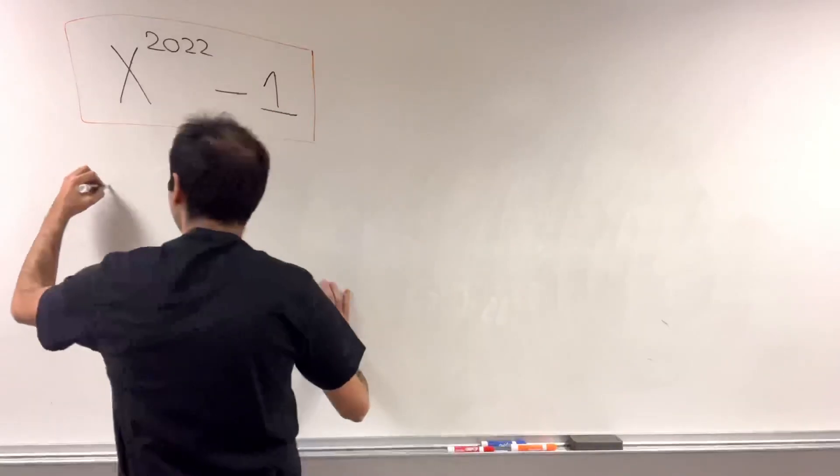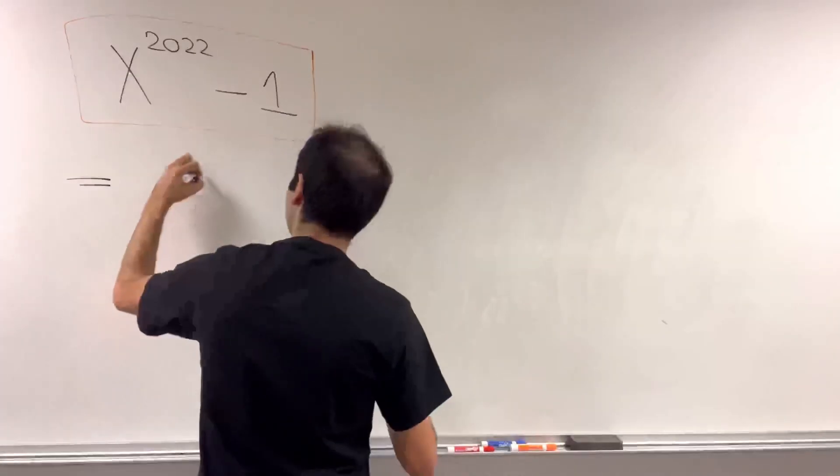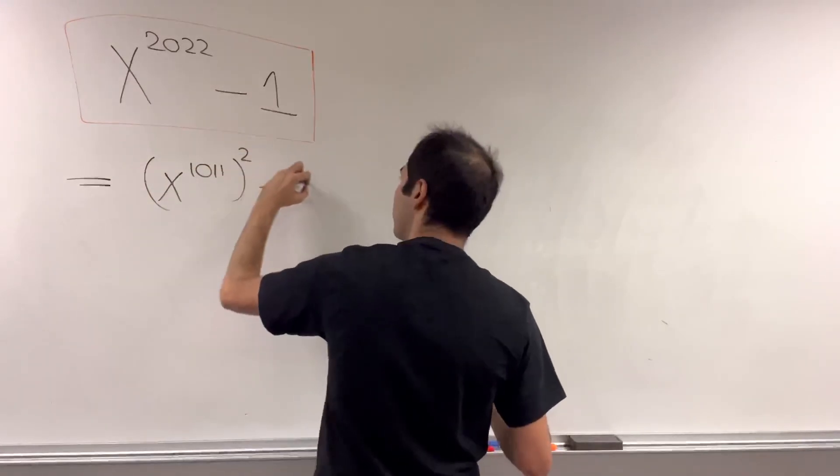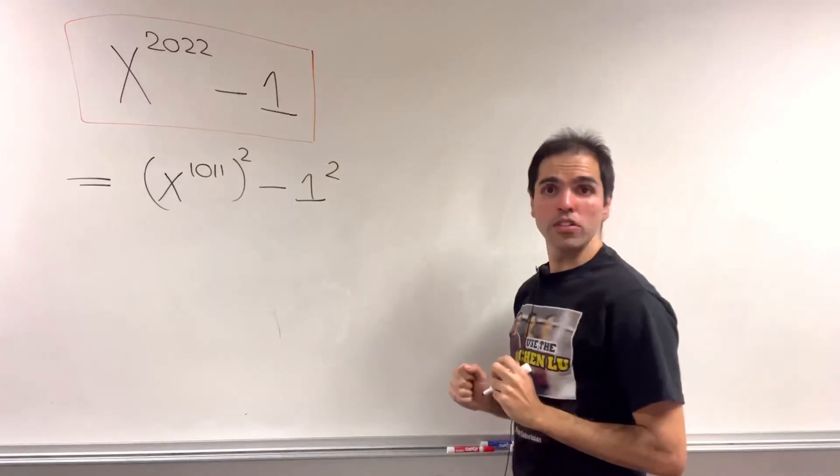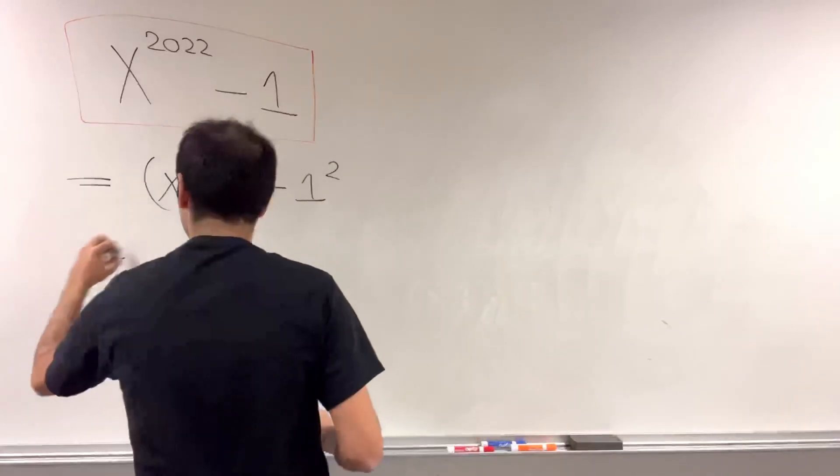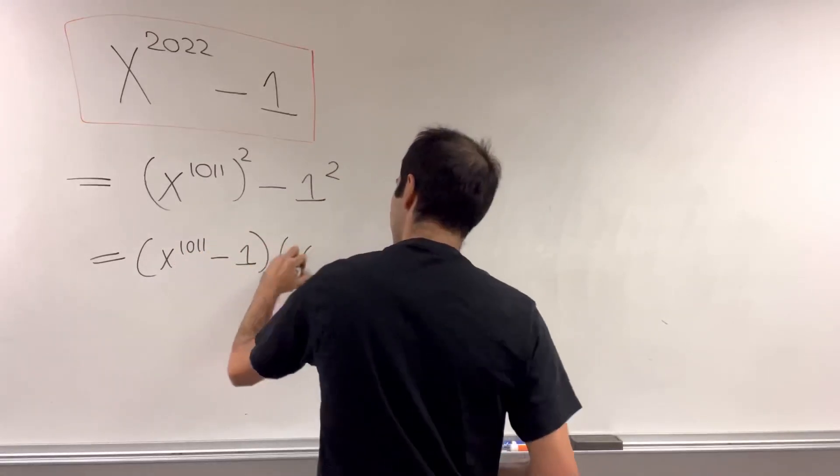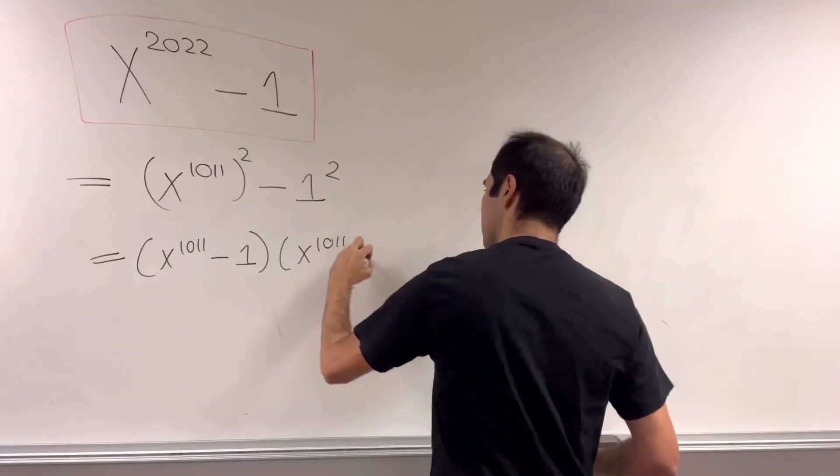Because x to the 2022 minus 1, that is the same thing as x to the 1011 squared minus 1 squared. Now just use the difference of squares. So x to the 1011 minus 1 times x to the 1011 plus 1.